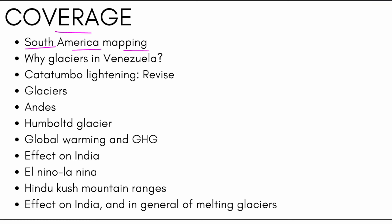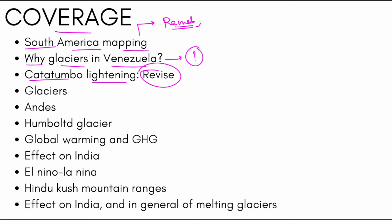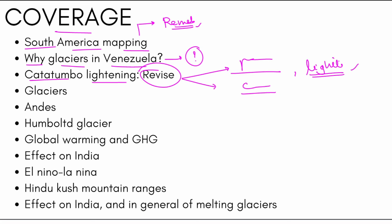The first thing is Southern Americas mapping — we have done this many times and will keep doing it so we can always remember it. Next we will be talking about why glaciers exist in Venezuela. Then we will talk about the Katatumbo lightning, which we have already read about, covering the locations of Lake Maracaibo and the Katatumbo river, and what forms this lightning.